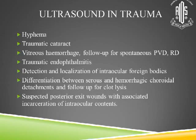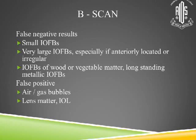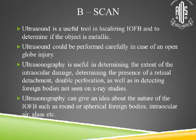B-scan is one of the most common investigations performed and has really revolutionized management. It is very useful in detecting traumatic cataracts, hyphema, vitreous hemorrhage with PVD, retinal detachment, intraocular foreign bodies, choroidal detachments, and suspected posterior exit wounds with associated incarceration of intraocular contents. A false negative B-scan can occur with very small or anteriorly located IOFBs, or with wood or glass. A false positive can occur with air or gas bubbles, lens matter, or an IOL. B-scan is useful for localizing IOFBs, determining whether an object is metallic, assessing the extent of intraocular damage, detecting retinal detachment, double perforation, and providing information about the nature of the foreign body.